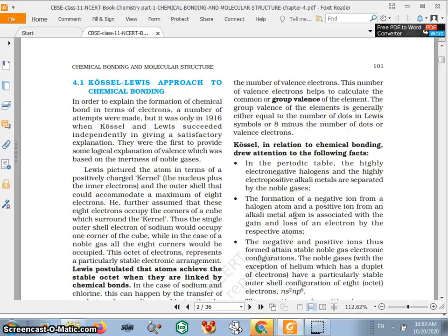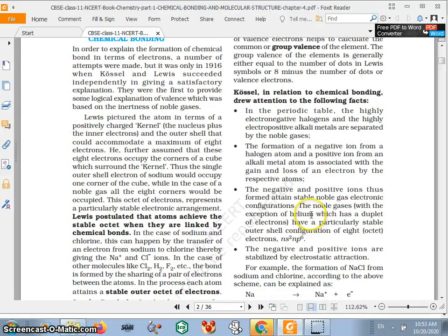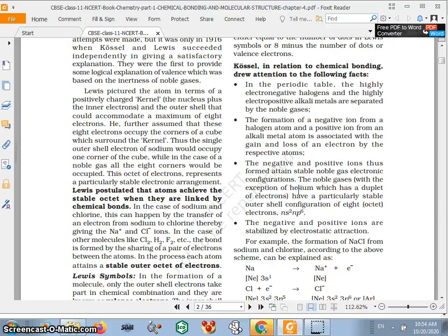What is the importance? Lewis, in relation to chemical bond, gave attention to the following facts. There are some facts like in the periodic table the highly electronegative halogens and highly electropositive alkali metals are separated by the noble gases. The formation of negative ions from a halogen atom and the positive ions from an alkali metal atom is associated with the gain and loss of an electron by the respective atoms.